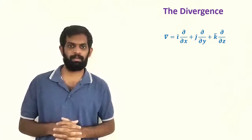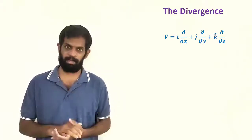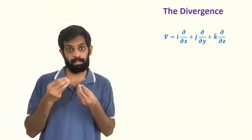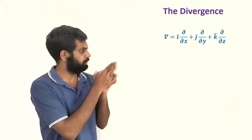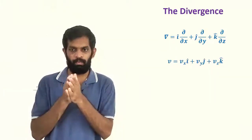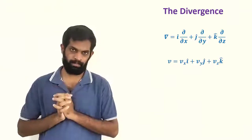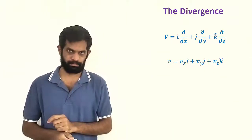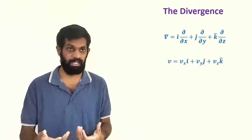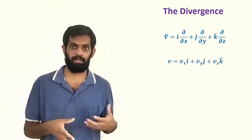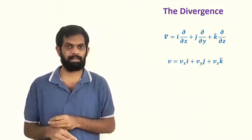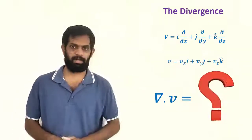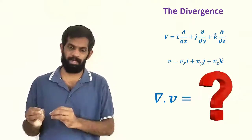Now, del dot a vector function — like del dot v — is what we are going to find. I have chosen vector function v equal to vx i-cap plus vy j-cap plus vz k-cap. Then v is the vector function. If you want to see the water flow, the velocity on the surface is v. A vector function should have a direction. So, what is del dot v? That is the question right here.